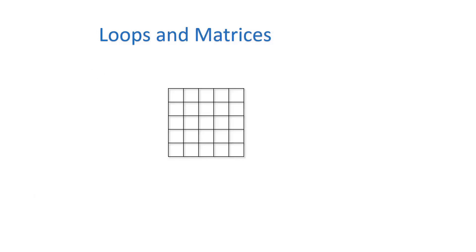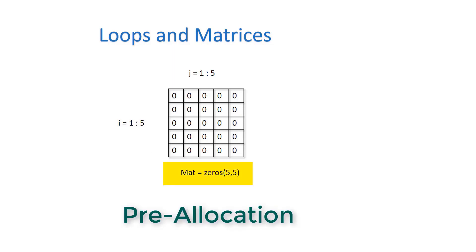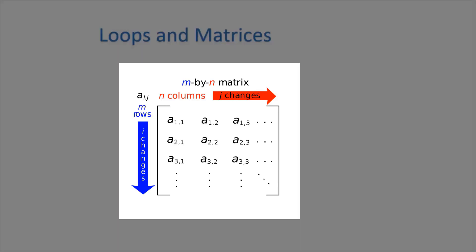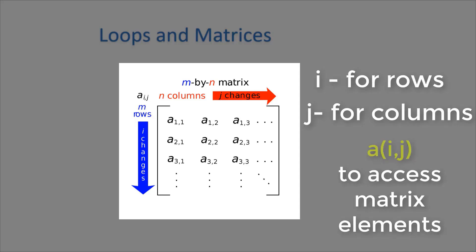Matrices have both rows and columns, so we need both i and j, two different variables to access individual elements in a matrix. We've seen this earlier in the semester. The variable i is used for rows, j for columns, and a of i comma j is the way to access matrix elements.